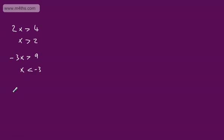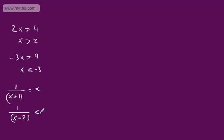What we're now going to look at are some algebraic inequalities. If we had, for example, 1 over x plus 1 is equal to x, we would solve by multiplying through by the linear factor and just solving a basic quadratic. When we have an inequality — for example, 1 over x minus 2 is less than 2x — we can't just multiply through because we don't know whether this is positive or negative. So we're going to look at some techniques to ensure that is not something we have to deal with.